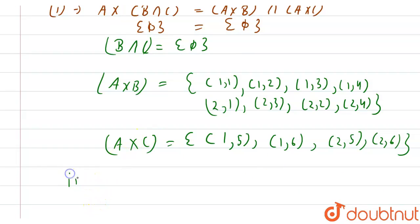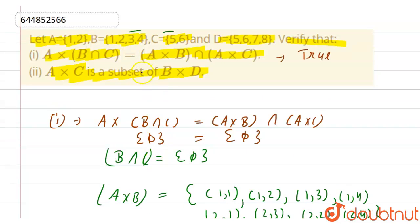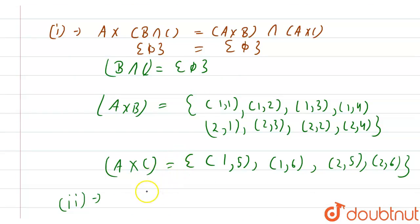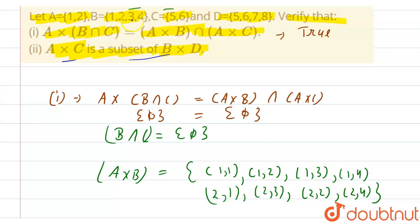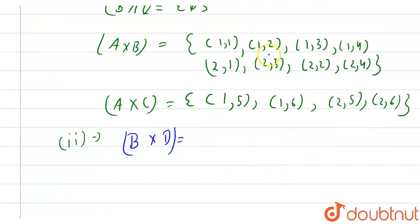For the second part, we need to verify that A×C is a subset of B×D. We already found A×C. Now let's find B×D. B = {1, 2, 3, 4} and D = {5, 6, 7, 8}. So B×D will include: (1,5), (1,6), (1,7), (1,8), (2,5), (2,6), (2,7), (2,8), (3,5), (3,6), (3,7), (3,8), (4,5), (4,6), (4,7), (4,8).